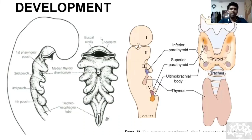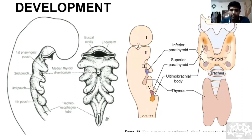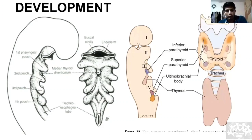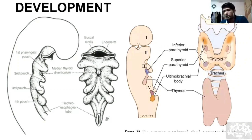First, development of the thyroid gland: it basically arises from the foramen cecum and then descends down into the neck. That tract, if it remains patent or persistent, becomes your thyroglossal duct. This part, which arises from the foramen cecum and goes down, is part of your pharyngeal arches and pouches. That is your medial analogue.